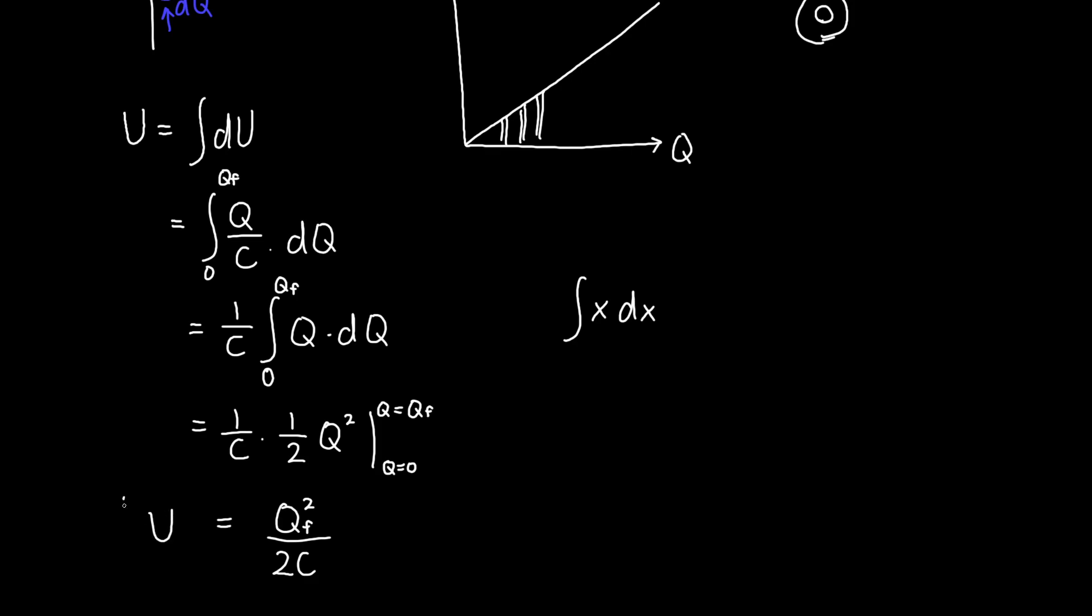And so this is the amount of energy that it took us to add a bunch of charge, to add some amount QF of charge to our capacitor plates. This is also the amount of charge that is now stored on the capacitor, which we could release at a later time. And typically you won't see it written with the F. Typically you'll just see it written as Q, where Q is the total amount of charge stored on the capacitor.